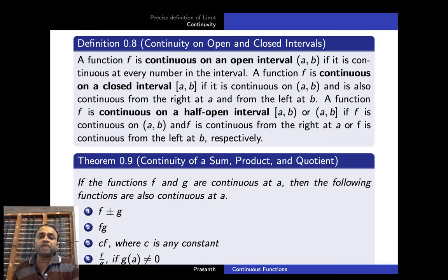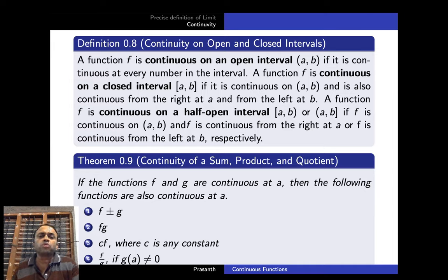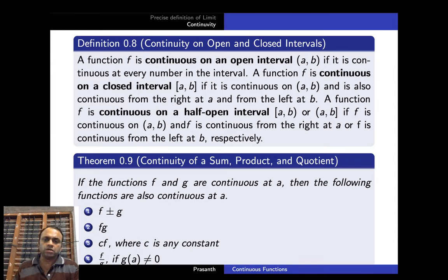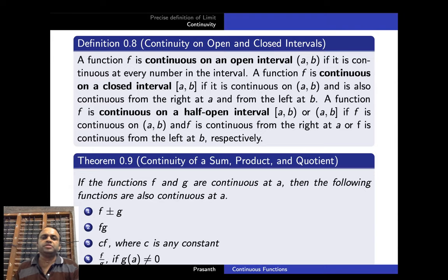A function f is continuous on an open interval (a, b) if it is continuous at every number in the interval. A function f is continuous on a closed interval [a, b] if it is continuous on the open interval (a, b), continuous from the right at a, and continuous from the left at b. Since the domain is [a, b], we don't know what happens outside it — at a we take the right limit, and at b we take the left limit.